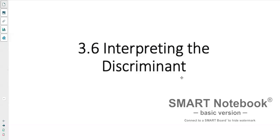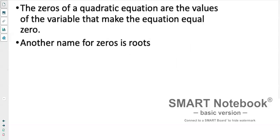Hello, today we're going over section 3.6 which is interpreting the discriminant. Zeros of a quadratic equation are the values of a variable that make the equation equal to zero. Another name for zeros is roots. A quadratic function can have zero, one, or two roots.